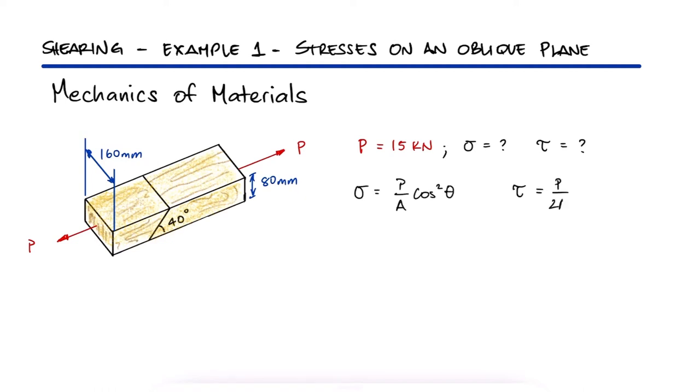the expressions we developed for σ and τ only work if the angle θ we have is that between the cross section area and the oblique plane, which means θ is the complementary angle of 40.